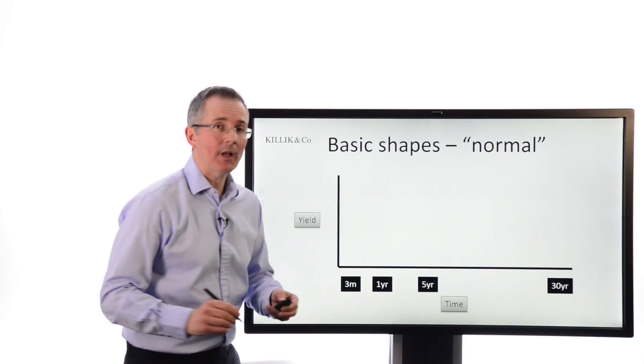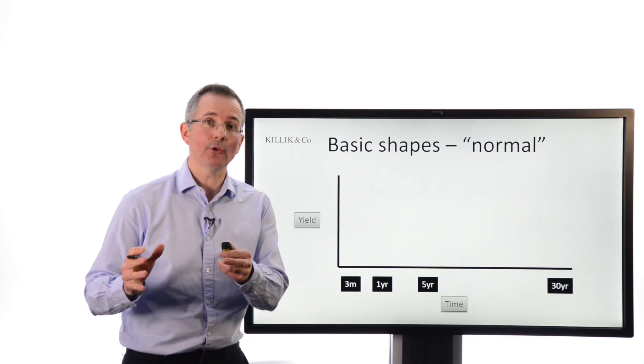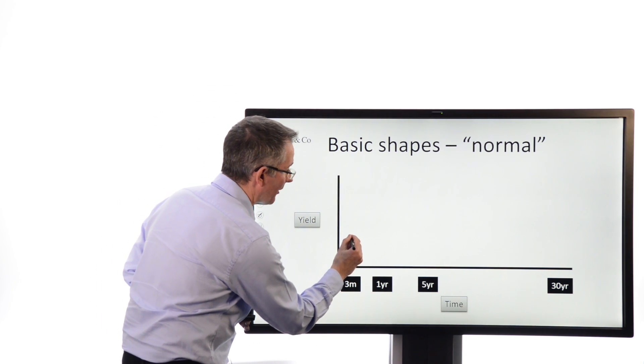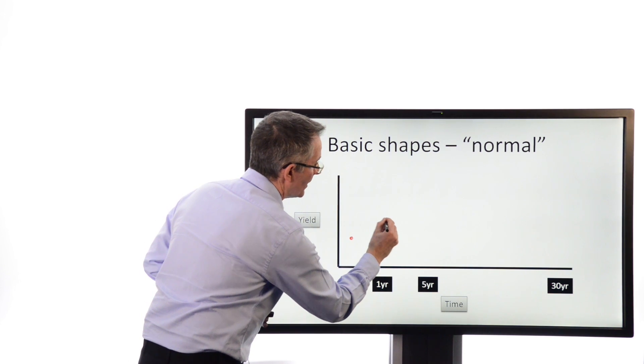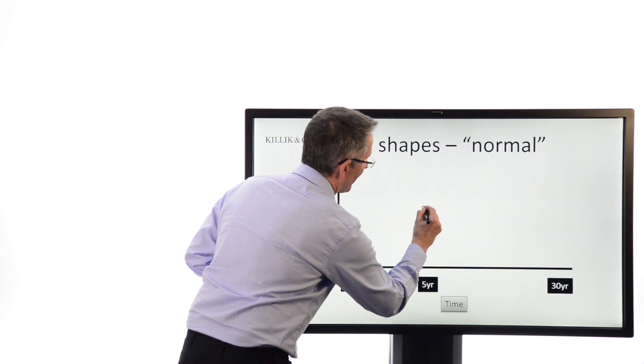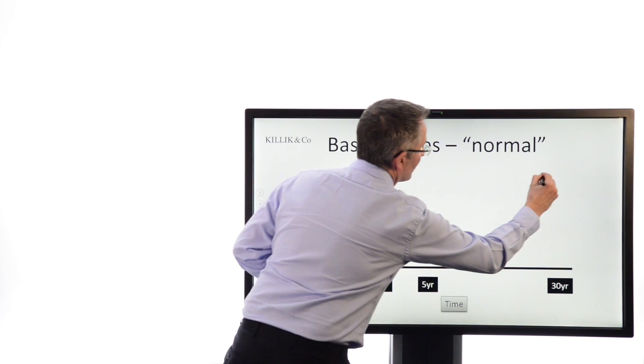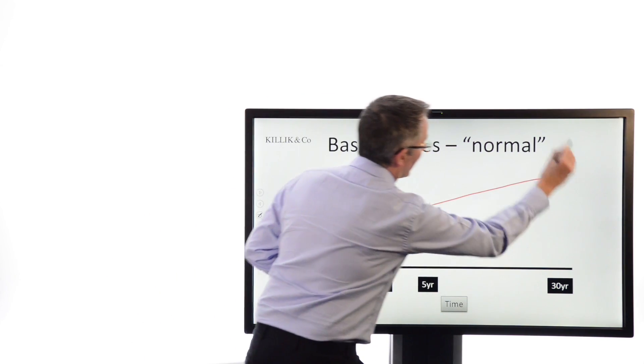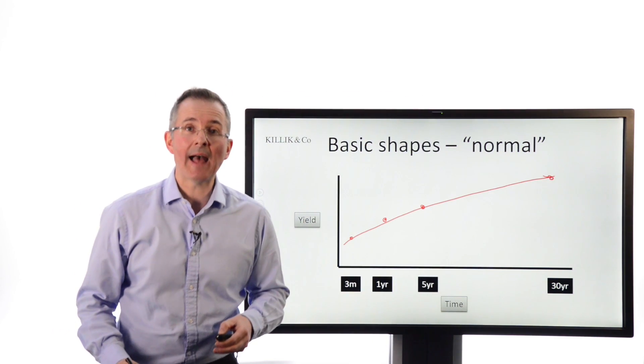If you were to take, let's say, UK government IOUs called GILTS and look at the total return, the yield available on a three-month as opposed to a one-year, as opposed to a five-year, as opposed to a 30-year, you generally expect, if you connect those dots, if you like, the shape to be something like that.